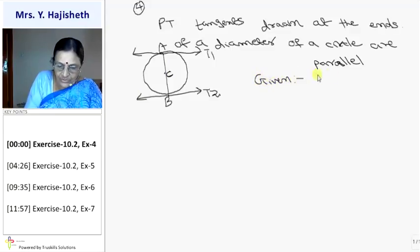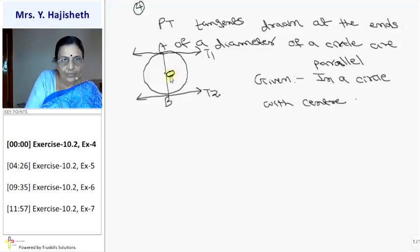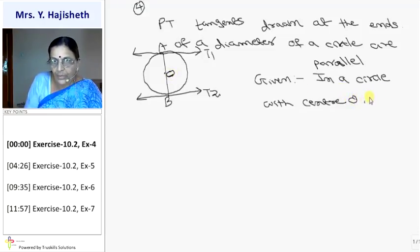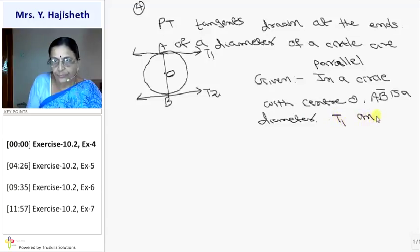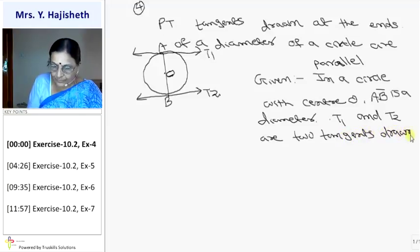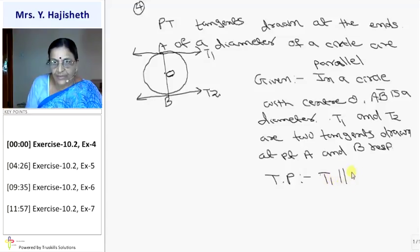First I write given data. What is given data? In a circle with center O, AB is a diameter. T1 and T2 are two tangents drawn at point A and B respectively. This is my given data. To prove, what do I have to prove? Prove that T1 is parallel to T2.